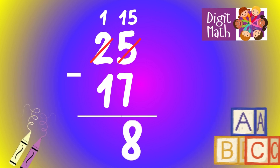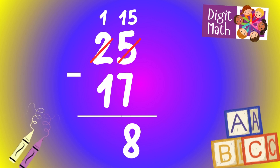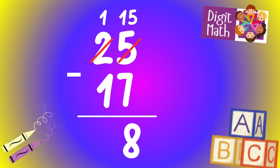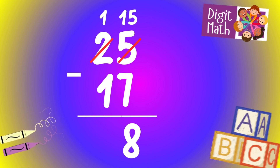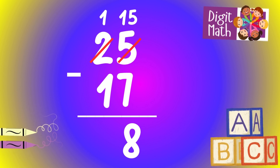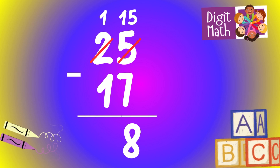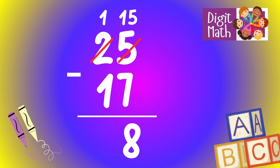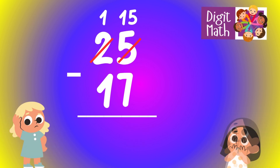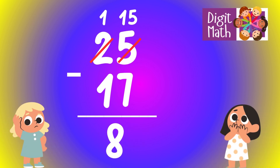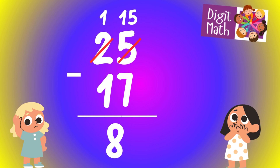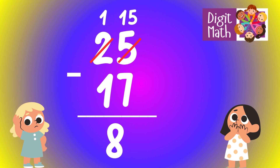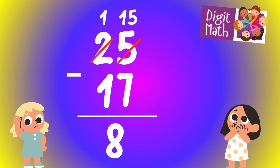In the tens column, we now have 1. Subtract 1 from 2, which equals 0, because we borrowed 1. So the final result is 25 minus 17 equals 8.